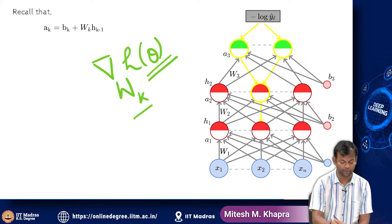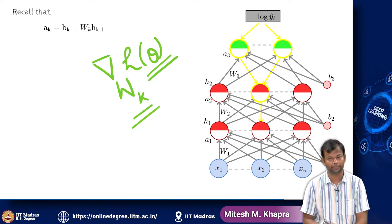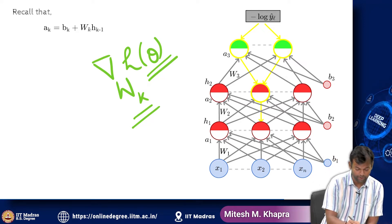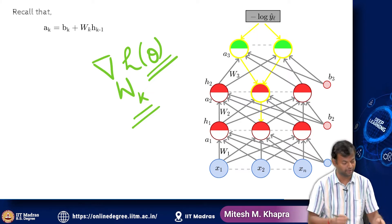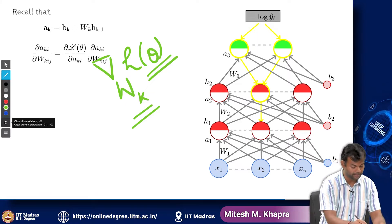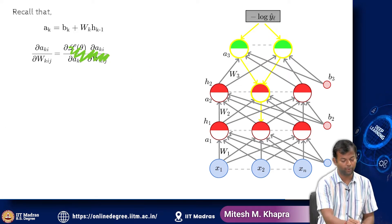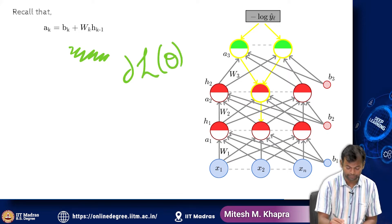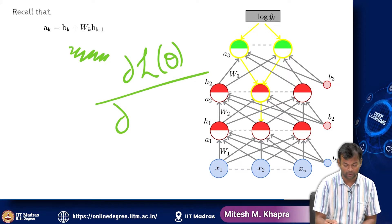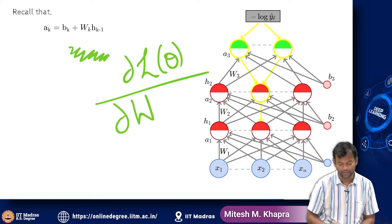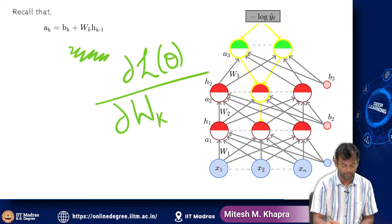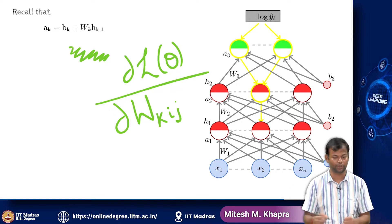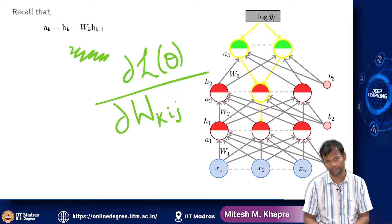This is the derivative of a scalar with respect to a matrix, so it is going to be a matrix. But instead of computing all the elements of the entire matrix at once, I am first going to compute the derivative with respect to one element of this matrix — say W_K_I_J. This matrix has N1 cross N2 entries, and I am going to focus on computing the derivative with respect to one of these entries.